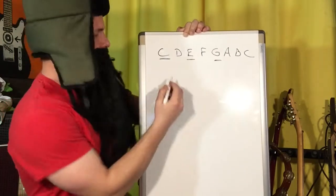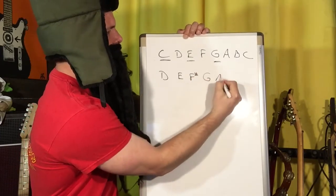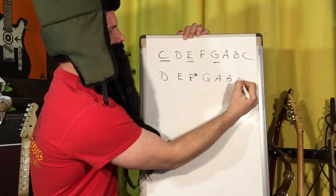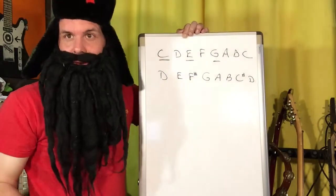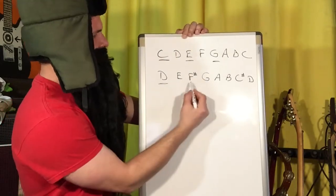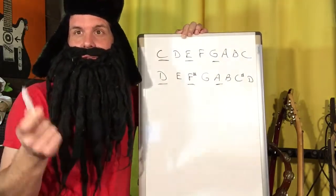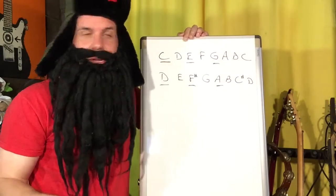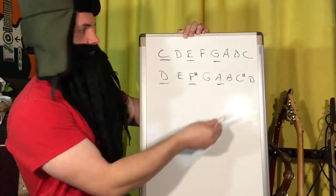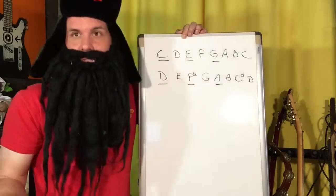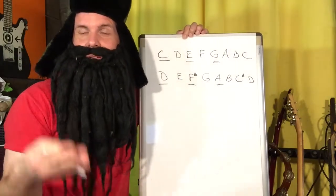Let's do the D major scale — we're going to do three here. D, E, whole step above E is F sharp, half step is G, A, B, C sharp, D. So your D major chord is made up of D, F sharp, and A. Are you noticing a pattern? Every single regular major or minor chord without a number, sus, or augmented after it is made up of the first note, the third note, and the fifth note of its scale. Now you know the three notes that make up every single major chord.